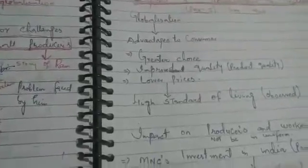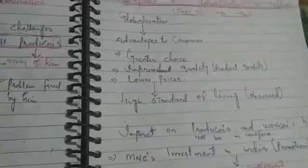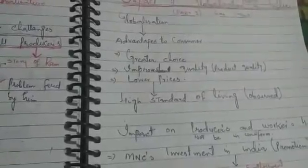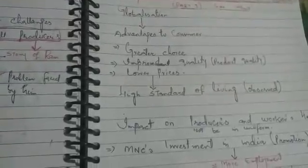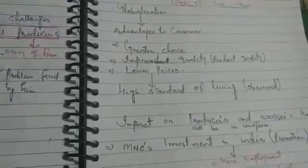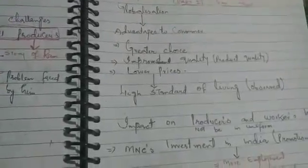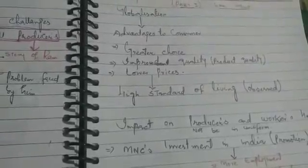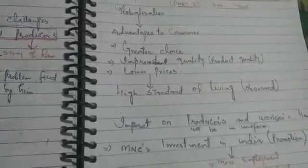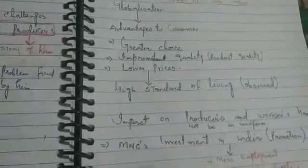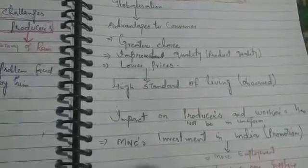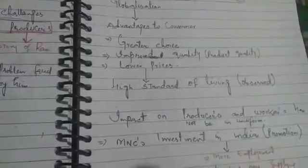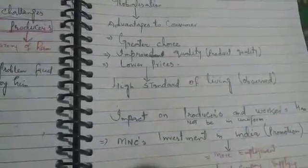In Part 1, we discussed the positive impact of globalisation in India. Due to globalisation, the first advantage was to consumers. Consumers and producers have a lot of benefit. For consumers specifically: greater choice in India, variety of products, improvement in product quality, low-price products, lower-cost products, and the standard of living for consumers has increased. This was the last topic of our previous session.